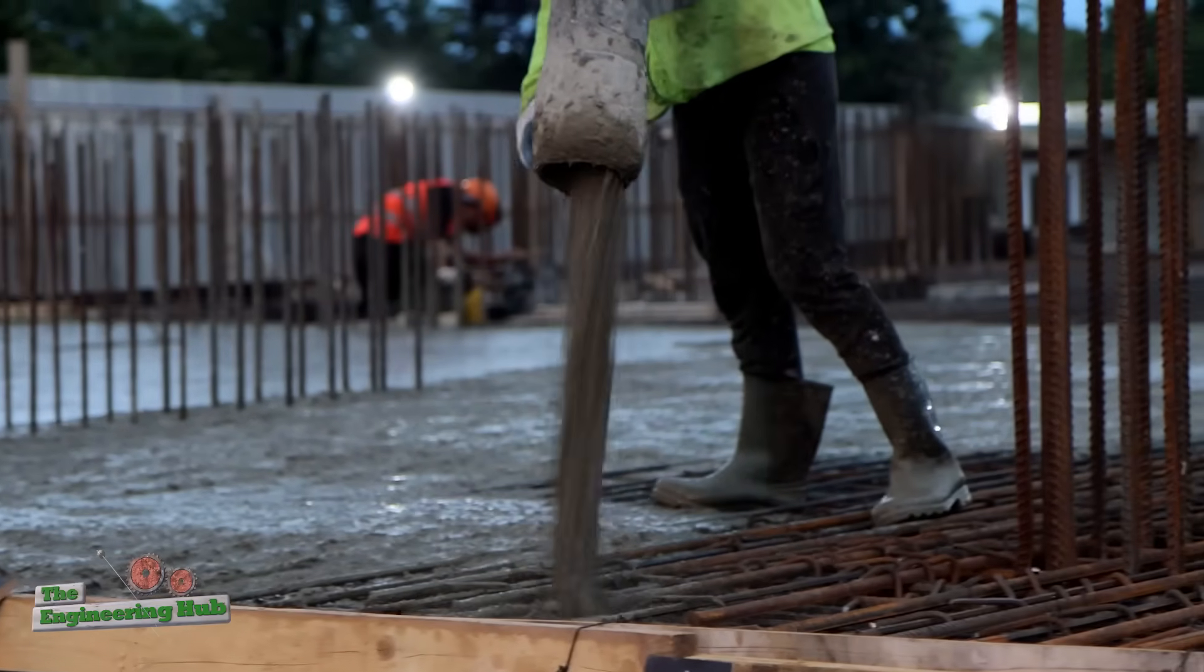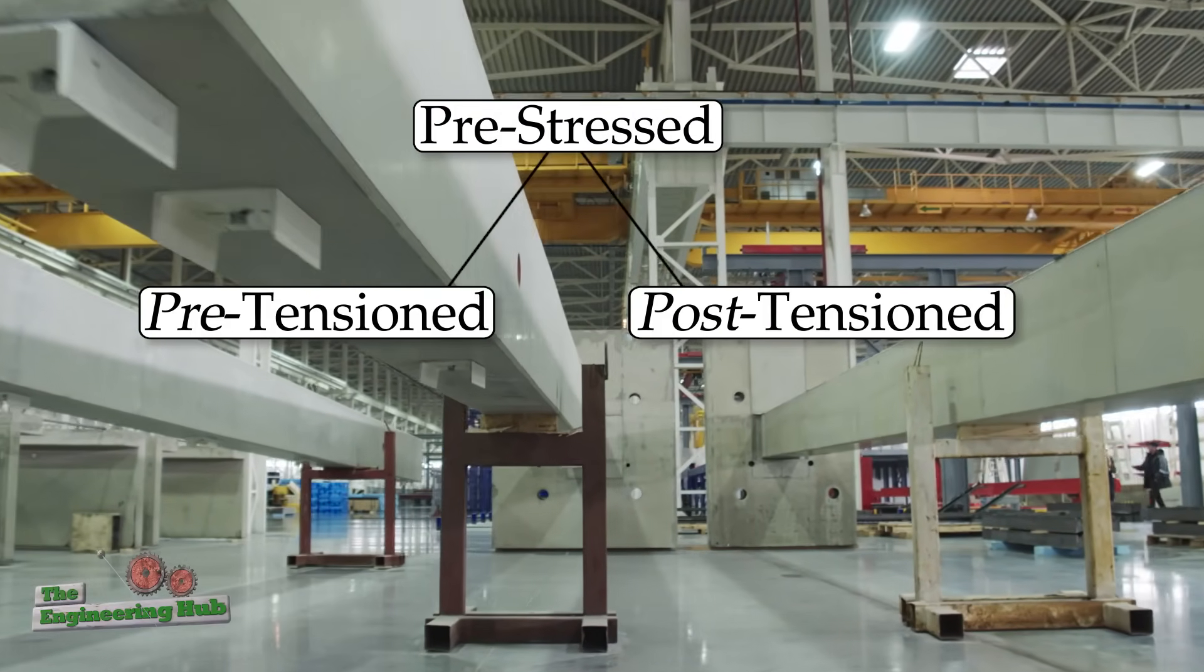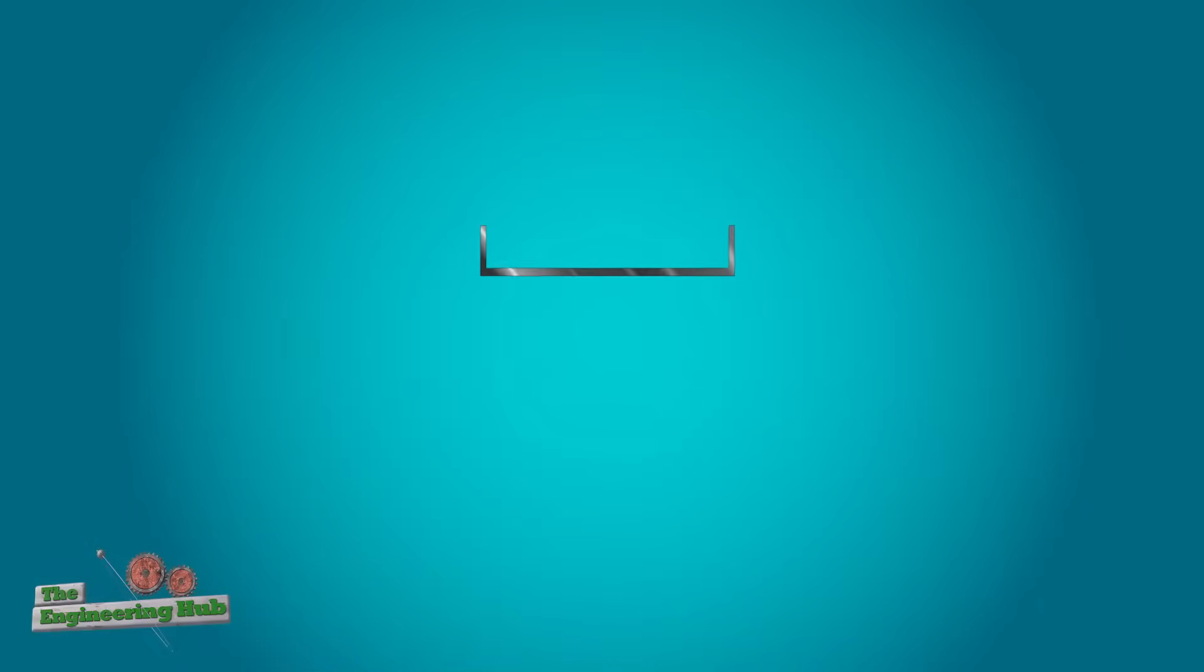Now let's contrast the traditionally reinforced concrete beam to a pre-stressed one. We'll look first at pre-cast, pre-tensioned concrete. For this beam, first the cables are placed in a form, and then they're tensioned.